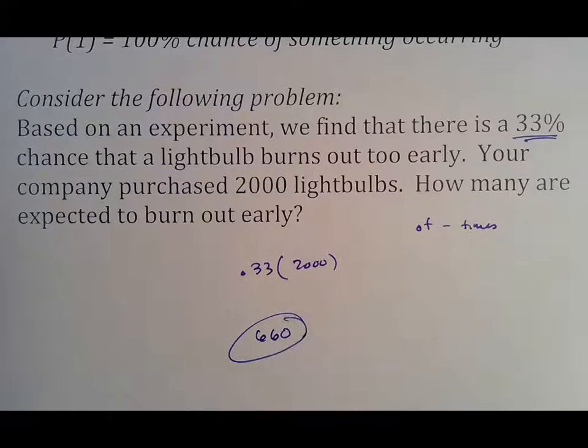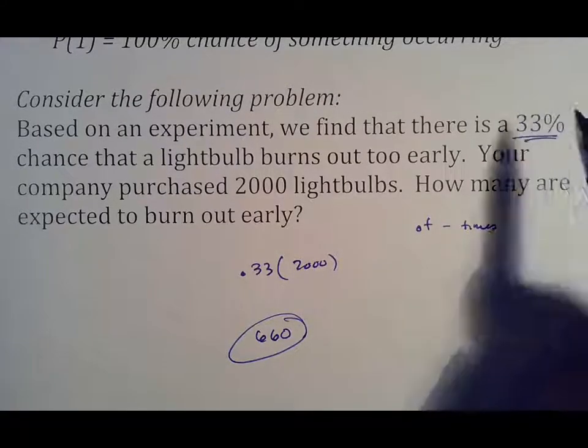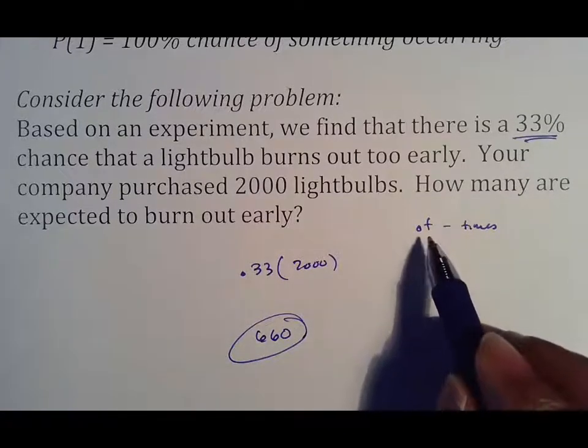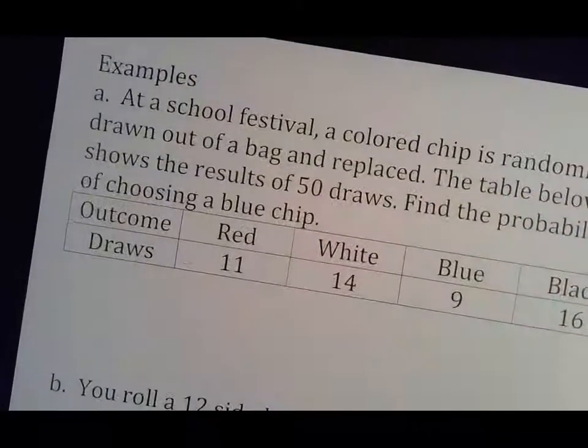And I get the answer of 660. So based off of my experiment, I know that 660 of these light bulbs will probably go bad, which means I should probably make a plan to adjust to that fact. But that is how you use your percentage. If you know the probability, you typically end up multiplying by whatever is there because percentages are typically percentages of something.